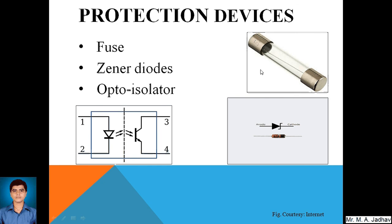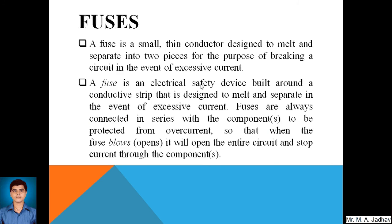Images are shown here: this is the image of a fuse with a very thin element inside, this is the symbol and picture of a zener diode, and here the circuit of an opto-isolator is shown. A fuse is a small thin conductor designed to melt and separate into two pieces for the purpose of breaking the circuit in the event of excessive current. The metal melts, the circuit opens, and there is no further flow of current, protecting the devices connected as the load.